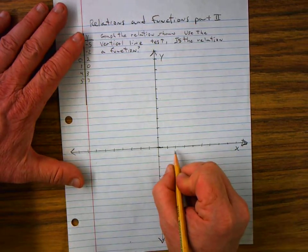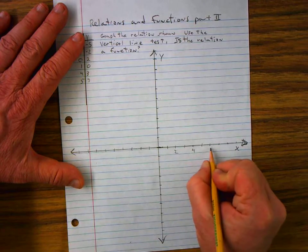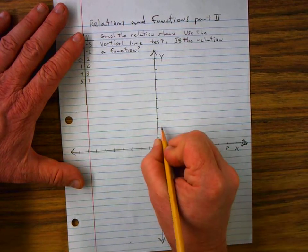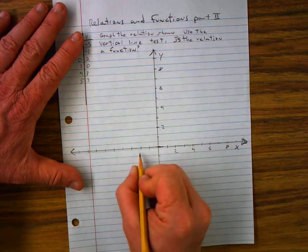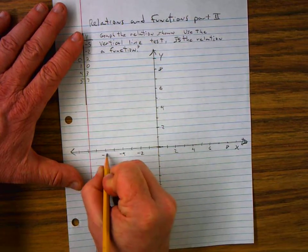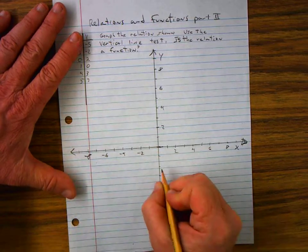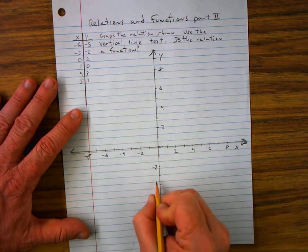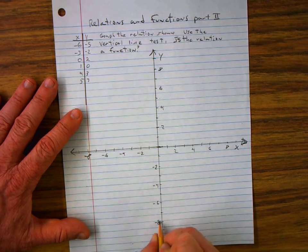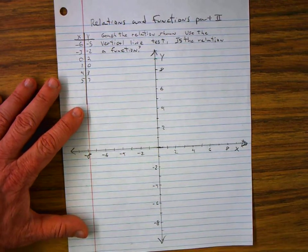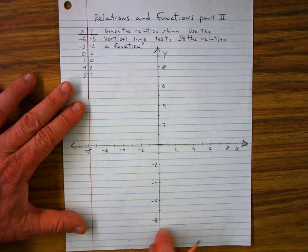And I'm going to number it. 2, 4, 6, 8. 2, 4, 6, 8. And so on. Now I'm ready to plot my ordered pairs.